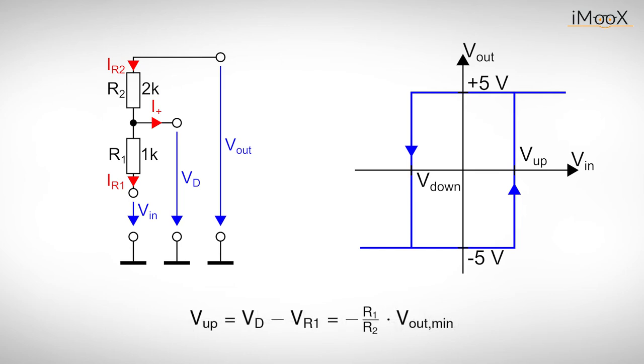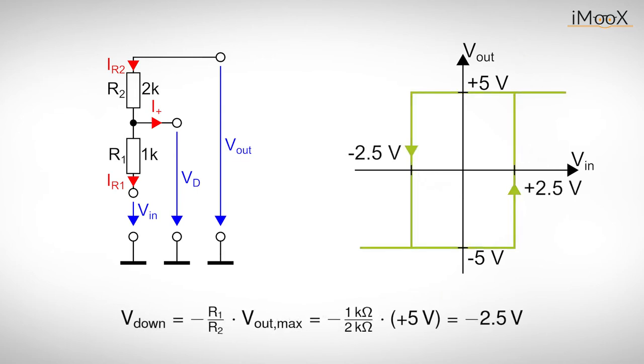If we use the numbers from the example, we get the following results for the trigger level. We proceed similarly for the second trigger level, but this time we start with an output voltage of plus 5 volts. This means we can plot the transfer function of our circuit.